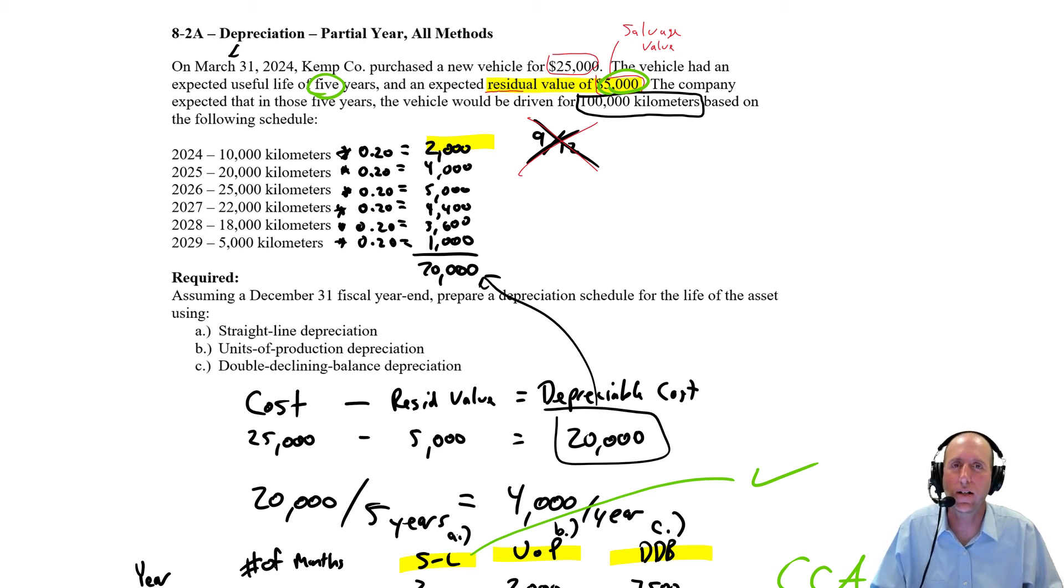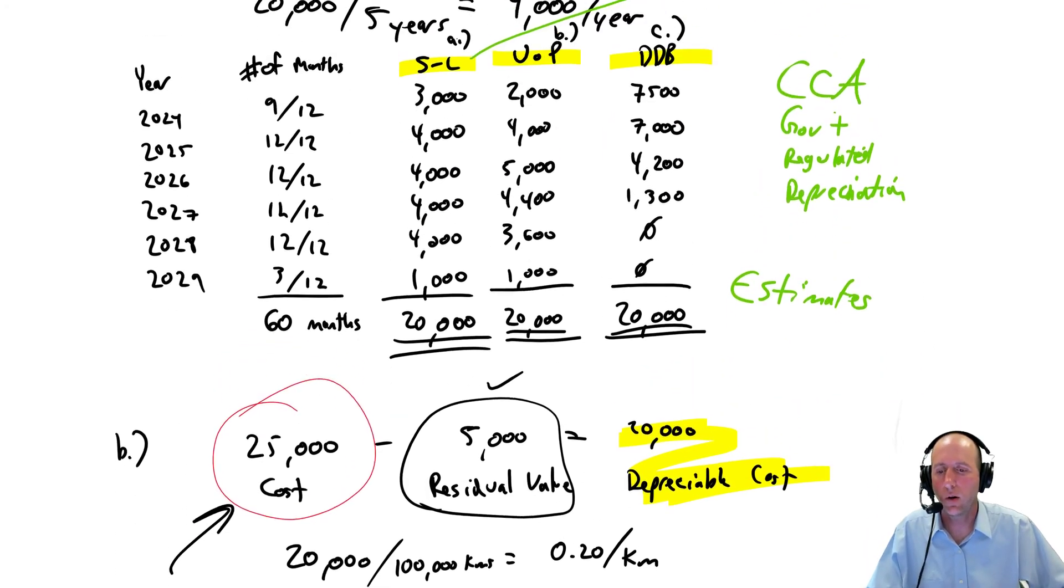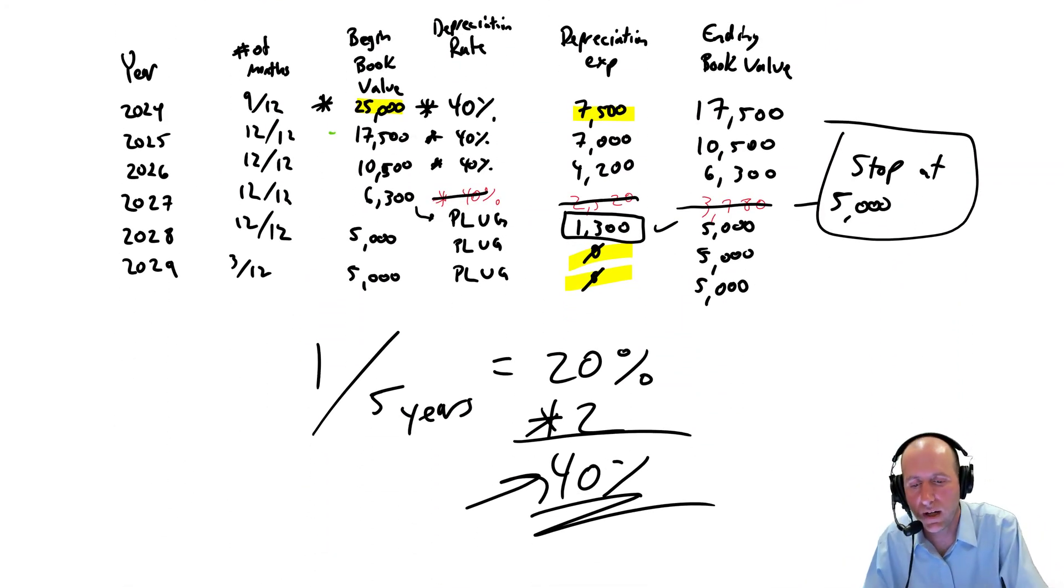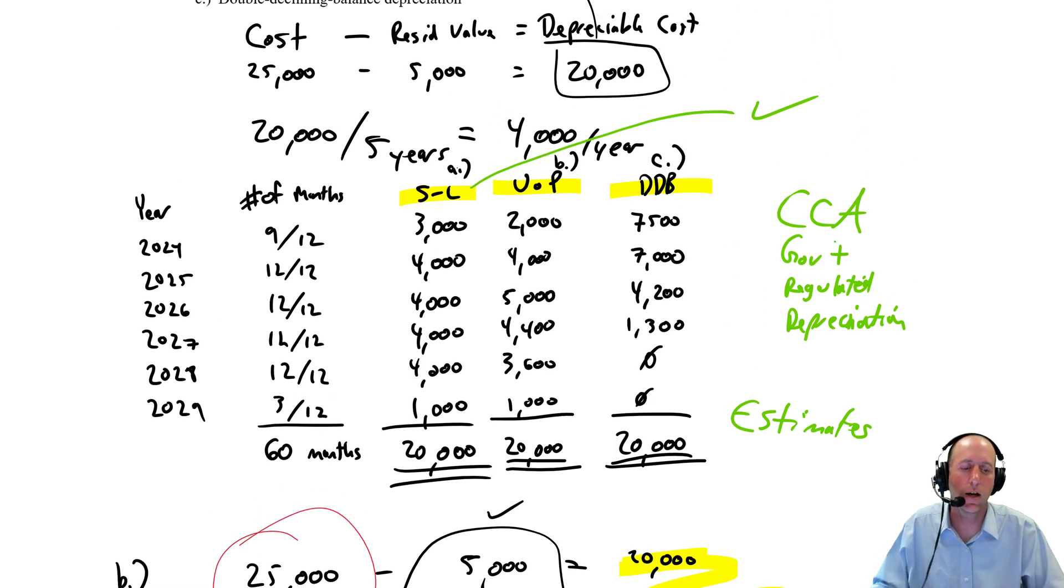The government hates that. So they just say you bought a new car, congratulations. Take, I think it's 30%, they say they allow 30% as the rate for a car. You bought a new piece of equipment, take 20%. You got a new building, take 4%. So if we look at our table here, you can't manipulate the beginning book value because that's an actual number, that's what you paid for the asset. The number of months the government knows the dates, and so that doesn't really matter. Depreciation rate, they tell you the rate, so you can't manipulate that either, and so therefore you can't manipulate your depreciation expense. They feel pretty solid about that number. So the government requires companies to use a form of double declining balance. That's fairly frequently used, and it's 100% used when you do your taxes.